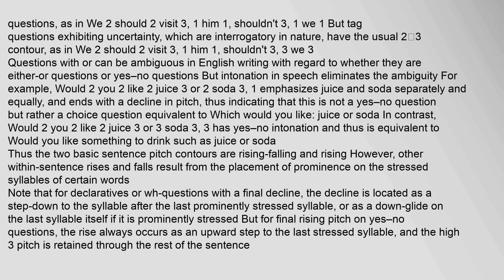Questions with 'or' can be ambiguous in English writing with regard to whether they are either-or questions or yes-no questions, but intonation in speech eliminates the ambiguity. For example, 'would you like juice or soda?' with falling pitch emphasizes juice and soda separately and equally, indicating a choice question. In contrast, 'would you like juice or soda?' with rising pitch has yes-no intonation, equivalent to 'would you like something to drink?' The two basic sentence pitch contours are rising-falling and rising. For declaratives or WH questions with a final decline, the decline is located as a step down after the last prominently stressed syllable, or as a downglide on that syllable if it is final.